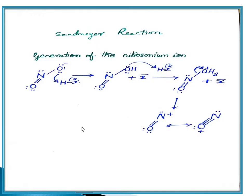Looking at the mechanism of Sandmeyer reaction: NaNO2 in the presence of HCl gives HNO2. HNO2 has a lone pair on oxygen (N=O–OH). This lone pair donates to H⁺ (from HX), giving H2O and leaving the nitrogen species with a positive charge. The oxygen, now with a positive charge, pulls electrons back, making it unstable, and H2O is released.